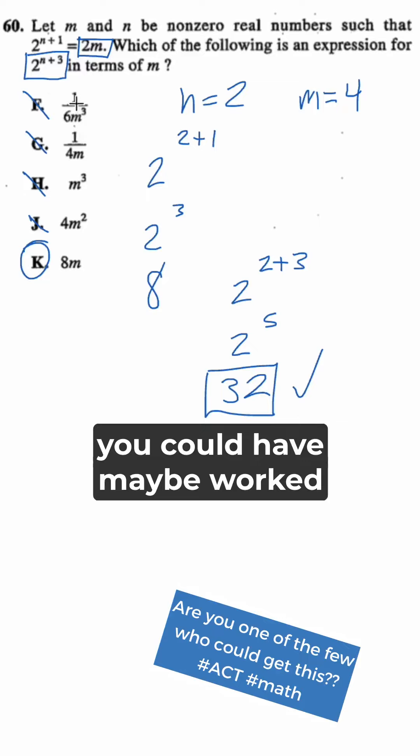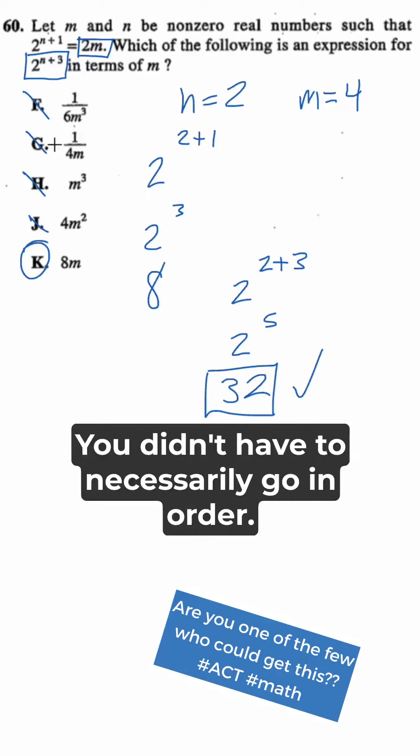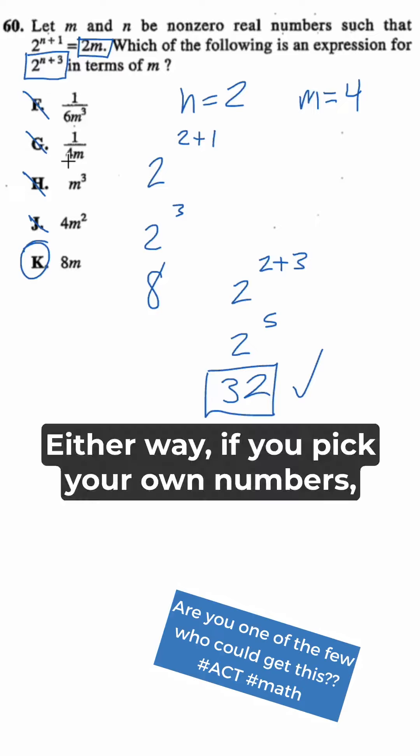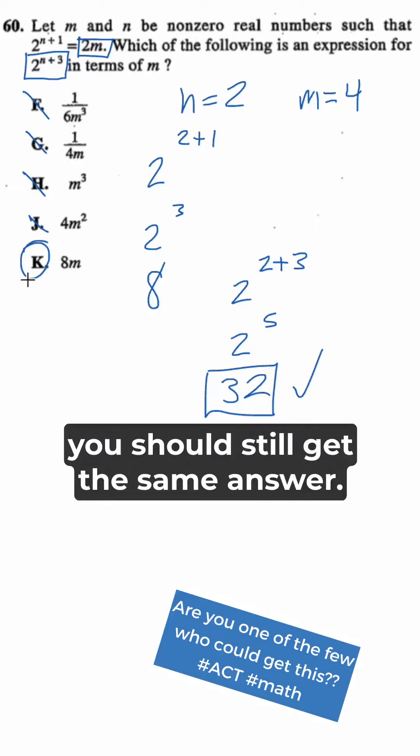If you wanted, you could have maybe worked backwards from the answers. You didn't have to necessarily go in order. Either way, if you pick your own numbers, you should still get the same answer, and you're going to get K.